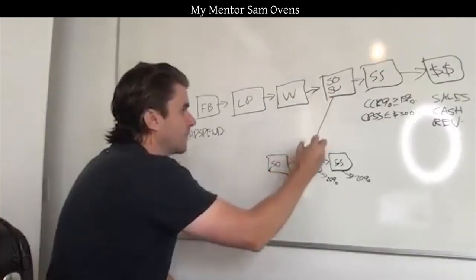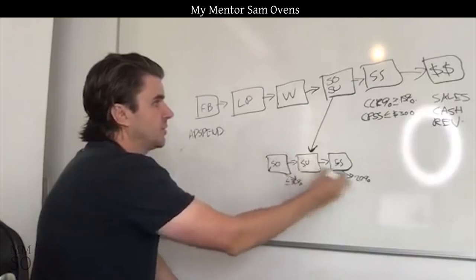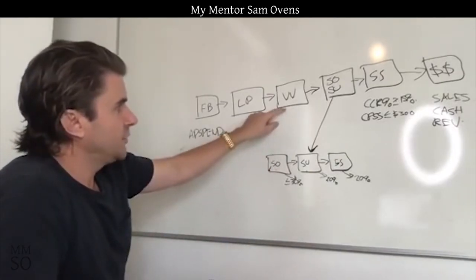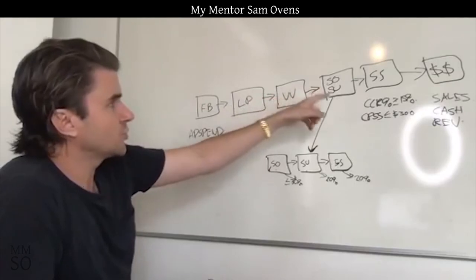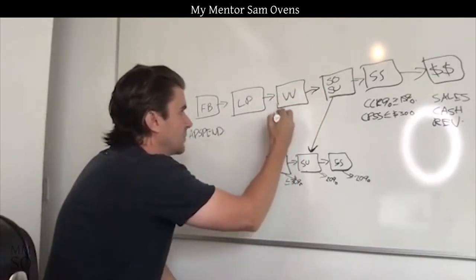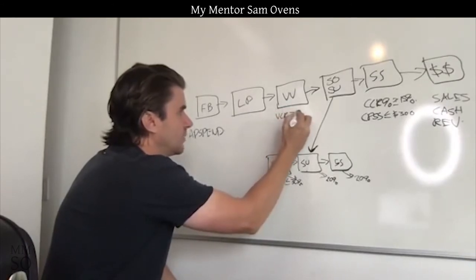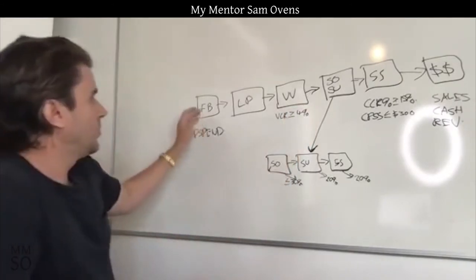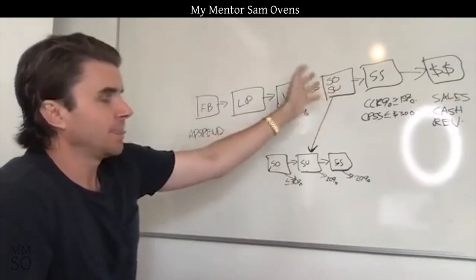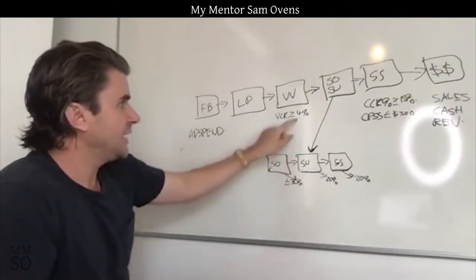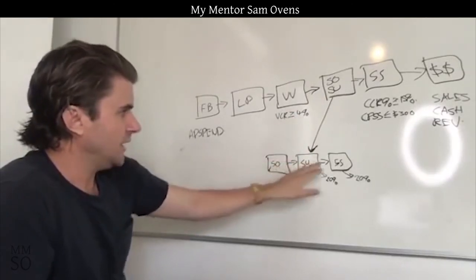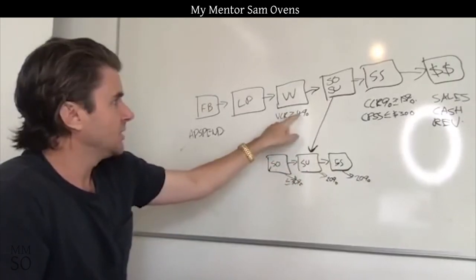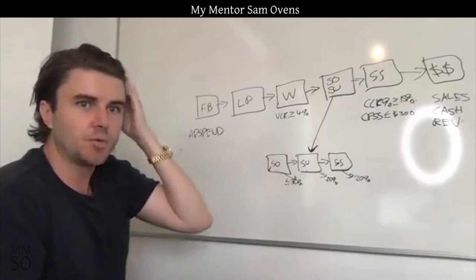That's how you can optimize this. Then we look at the value video. You should have a conversion rate of leads to strategy sessions — I call this the video conversion rate — and that should be greater than or equal to roughly 4%. So if 100 people opt in on the landing page, we should get roughly 4 surveys completed. If we get less than that, we want to look through here to make sure there's not a lot of drop-off.